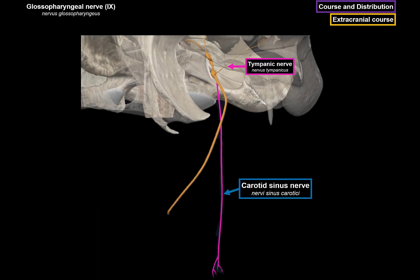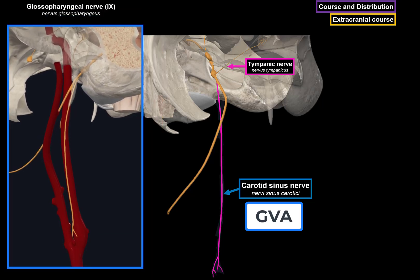Next is the carotid sinus nerve, consisting of general visceral afferent fibers descending along the internal carotid artery toward the bifurcation of the common carotid artery. It sends terminal branches to the carotid sinus and carotid body, transmitting chemoreceptor information to regulate blood oxygen and carbon dioxide levels, and baroreceptor information from the carotid sinus to aid in blood pressure regulation. These signals travel to the inferior ganglion of the glossopharyngeal nerve, then to the nucleus of the solitary tract.